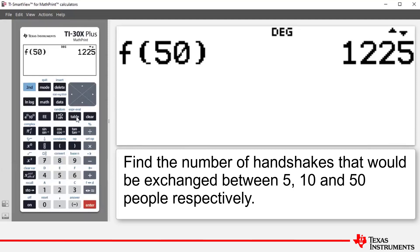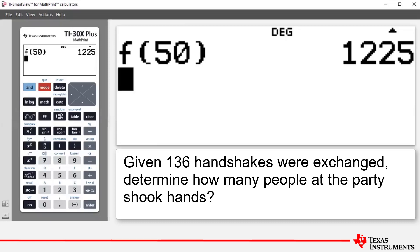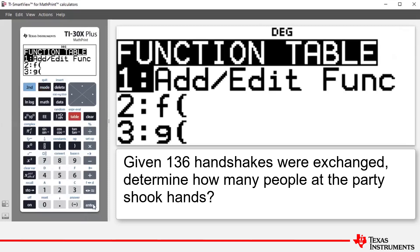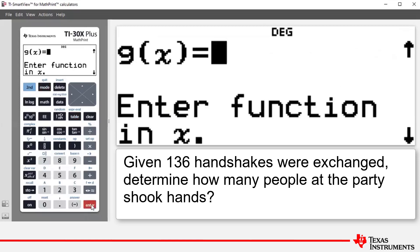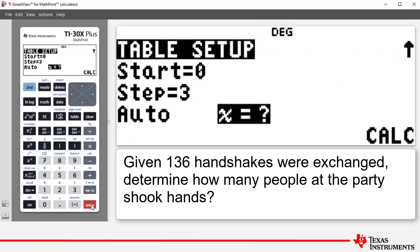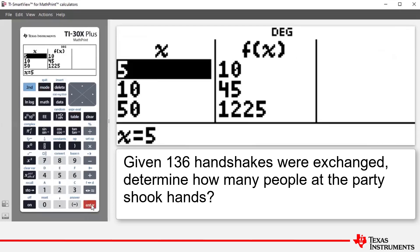Let's go back to the table and look at part B. Given 136 handshakes were exchanged, determine how many people at the party shook hands. So we need to go back into our table. We press table, 1 or enter, and then keep pressing enter until we get back to our table. Notice that when there are 10 people, there are 45 handshakes.